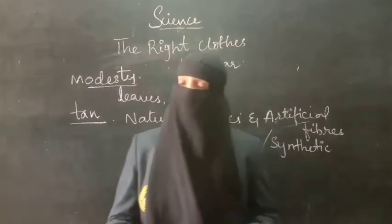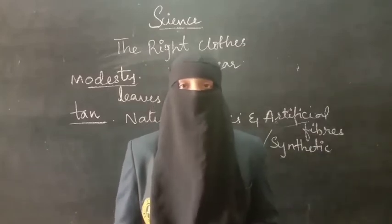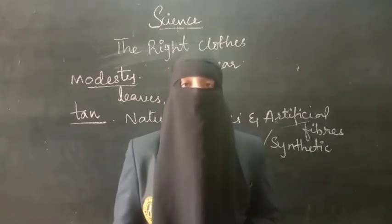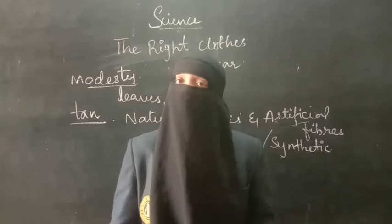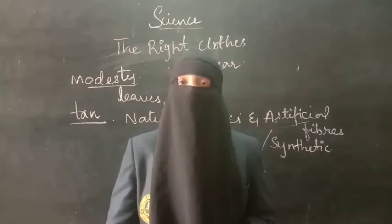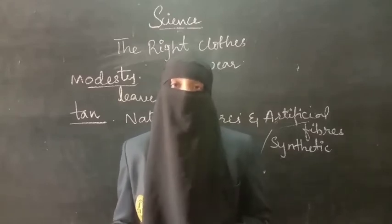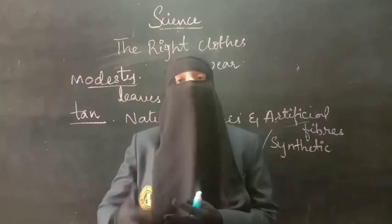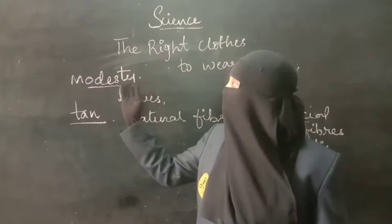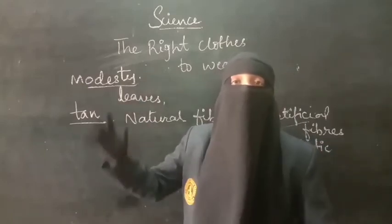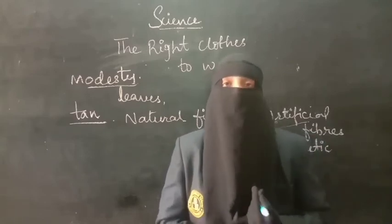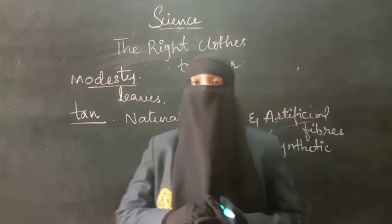Clothes also protect us from insect bites. Mosquitoes commonly bite on the face, hands, and feet — where the body is not covered. But if your body is covered with clothes, mosquitoes may not bite you. So clothes protect us from insect bites and mosquito bites as well. These are different uses of clothes: they are the symbol of modesty, and they protect us from cold, heat, and insect bites, as well as from dust.